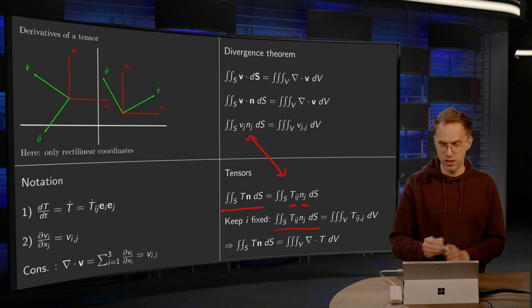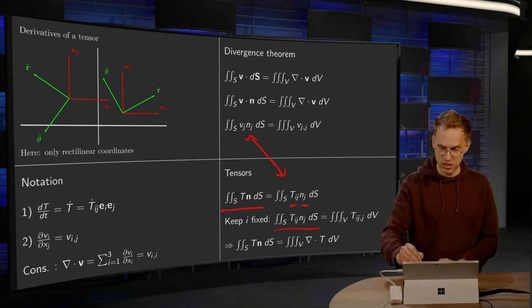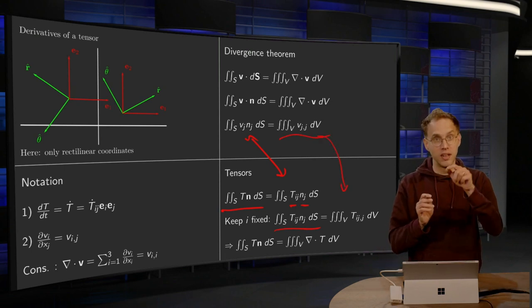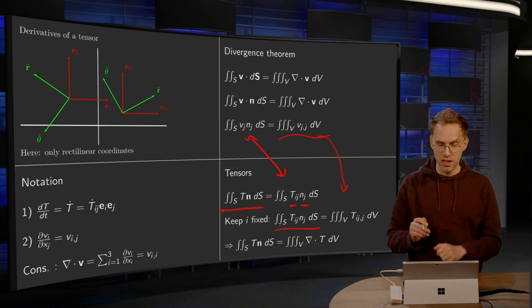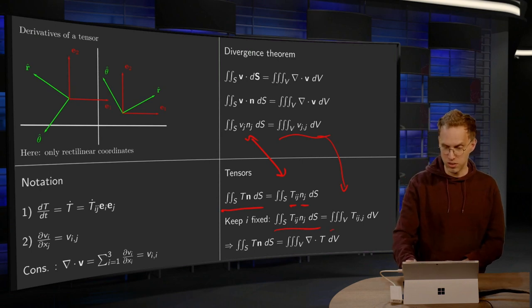So what you do then, this expression over here, keep i fixed and use a similar right inside. So what you have to do is differentiate with respect to the j variable and take the integral.